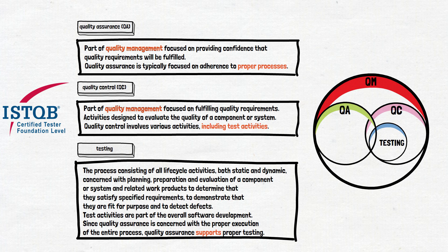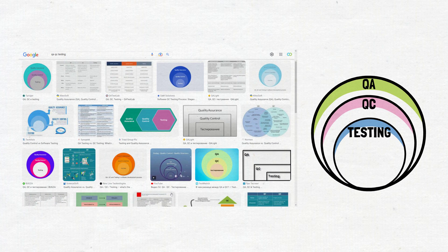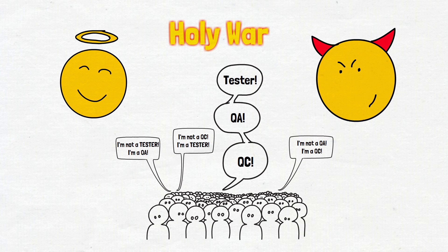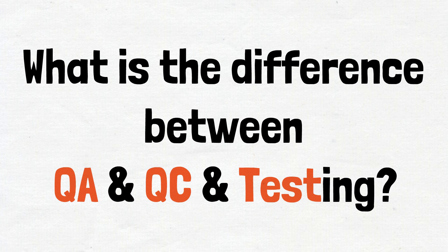We know that this does not answer the question of what the responsibilities and duties are in different job positions — but the official literature does not mention anything about it. That's why there are different explanations in articles on the internet. You can choose anything you like and try to prove that your answer is correct. This is exactly what the holy war is about: proving your answer is correct, or at least making other QA, QC, tester, expert, and specialist colleagues respect your opinion. And that is our answer to the question: what is the difference between QA, QC, and testing?